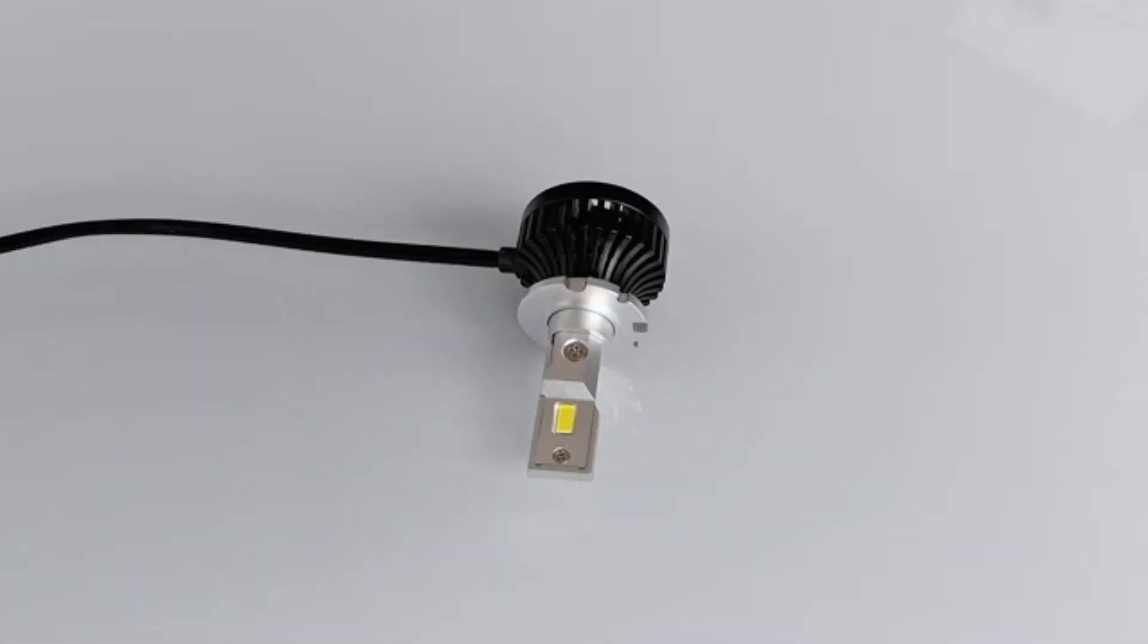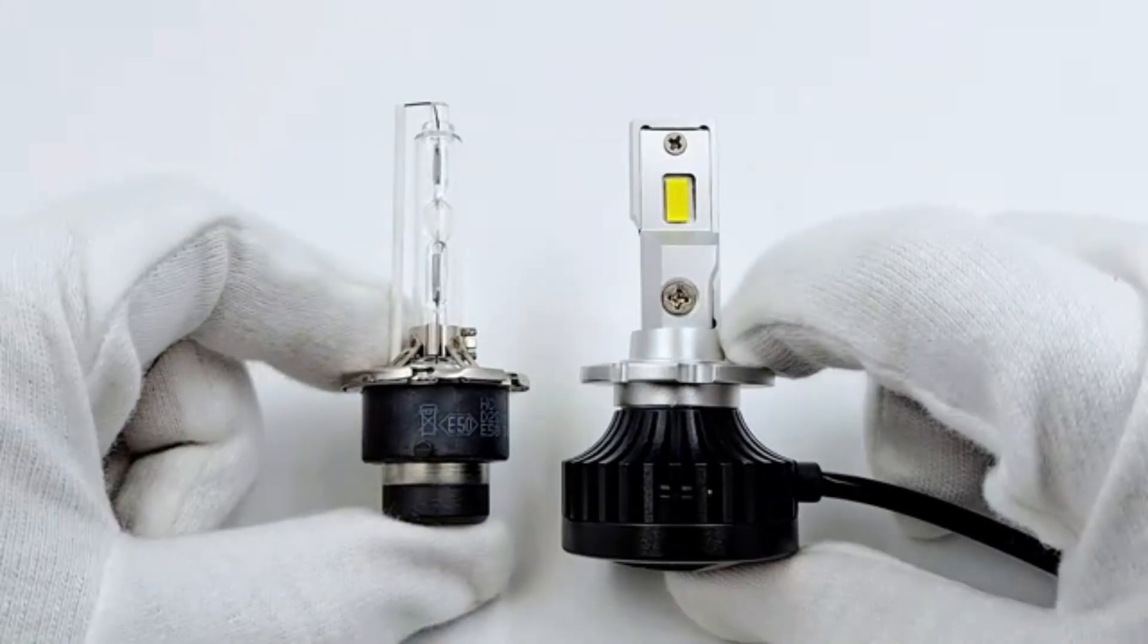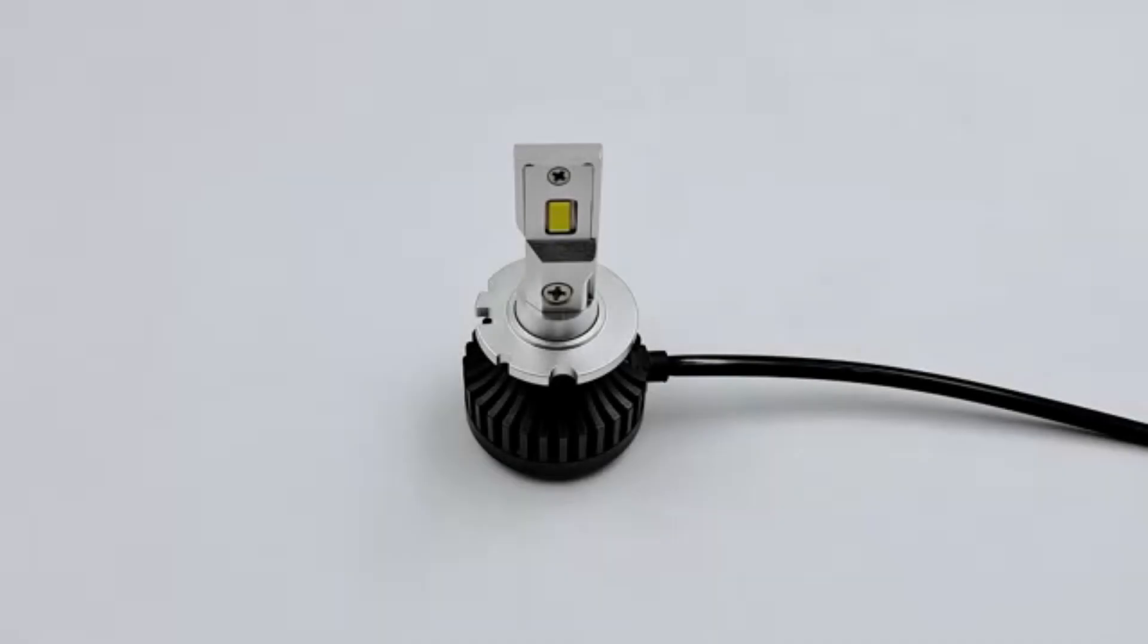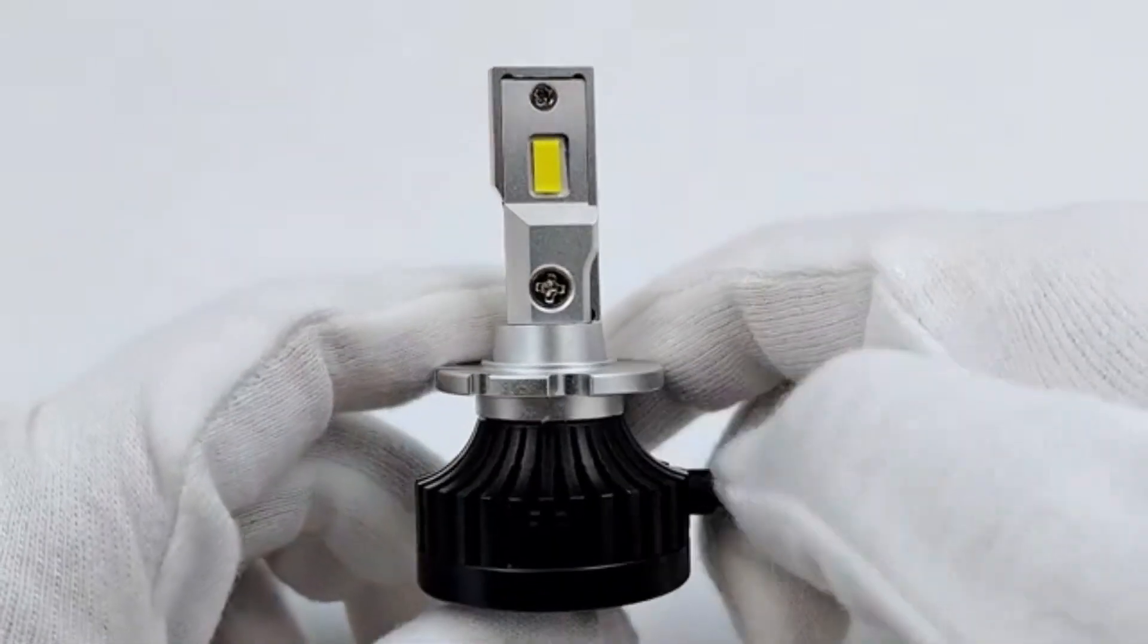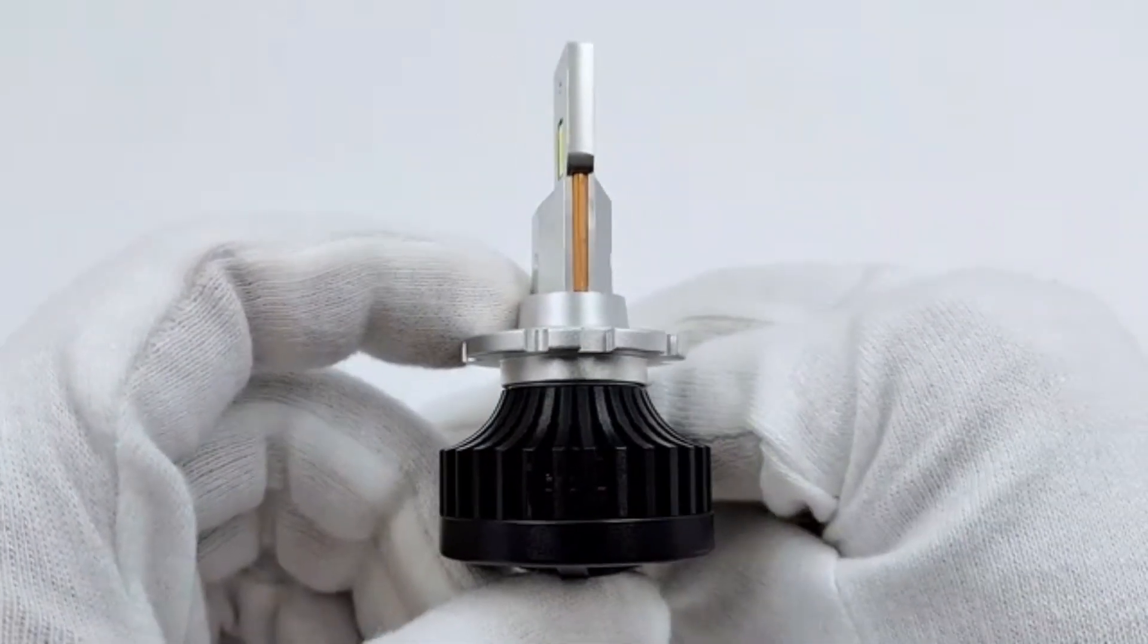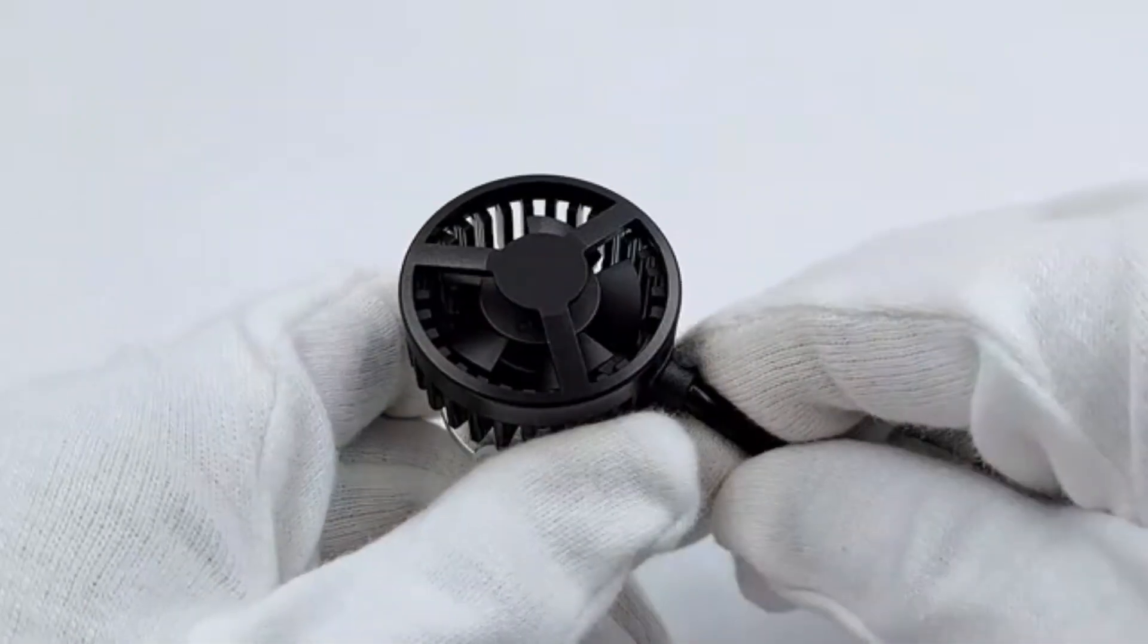One of the standout features of the Osram Zenark Original D4S HID is its wattage of 35 watts. This power output ensures efficient energy consumption while delivering an impressive lighting experience.